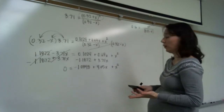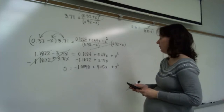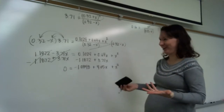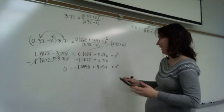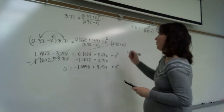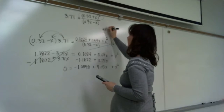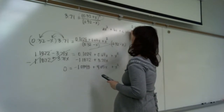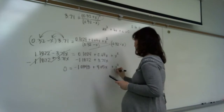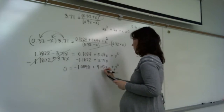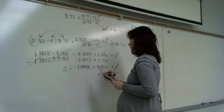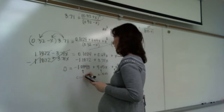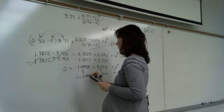Now it's in quadratic form, which I could put into a graphing calculator. If we don't have a graphing calculator, we'll do it by hand. The quadratic formula applies to ax² + bx + c = 0. Here a is 1, b is 4.05, and c is negative 1.0848.